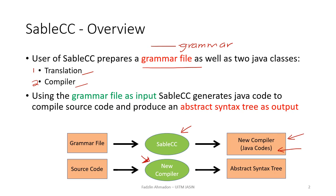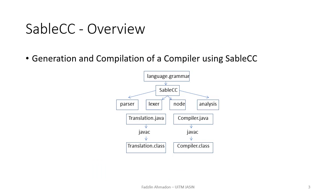For this new compiler, we can insert our source code and as the output, it will be in the form of an abstract syntax tree. This is an illustration of how the generation and compilation of a compiler using SableCC is done.